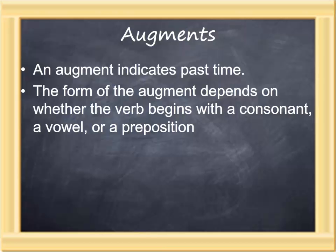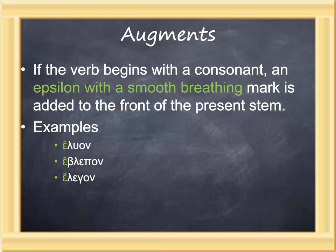If the verb begins with a consonant, an epsilon with a smooth breathing mark is added to the front of the present stem. So the present stem lu begins with a consonant, and epsilon is added. The stem blep begins with a consonant, and epsilon is added. The stem leg begins with a consonant, and epsilon is added. If the verb begins with a consonant, it's augmented by adding an epsilon to the front.